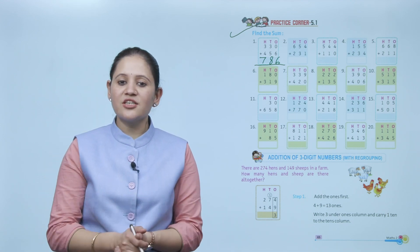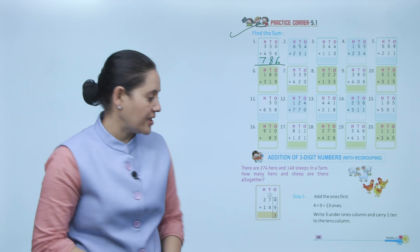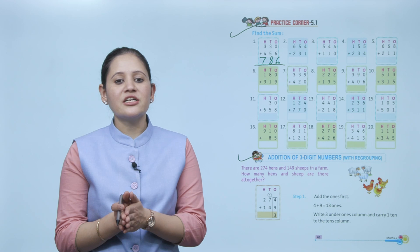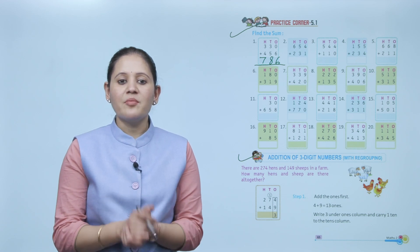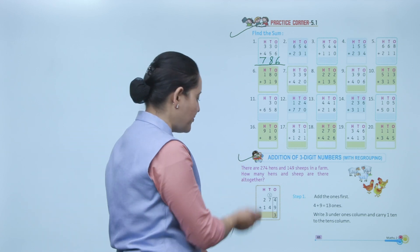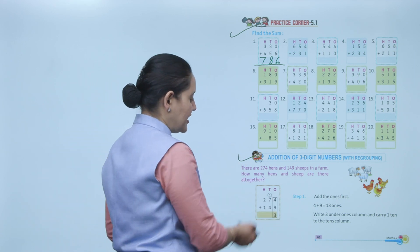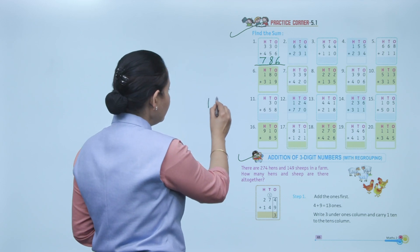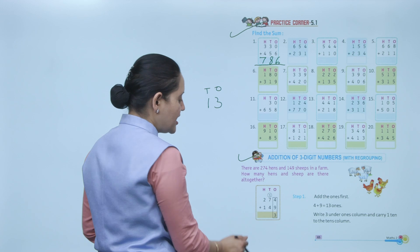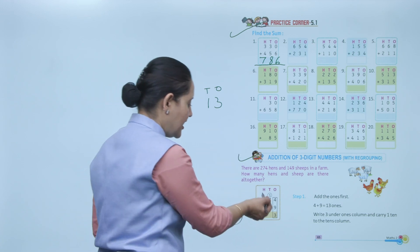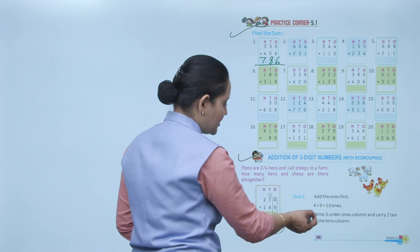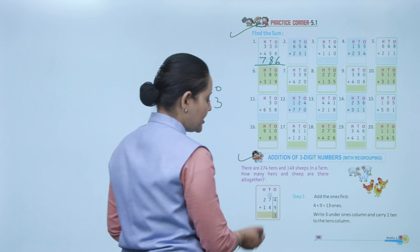Next is addition of three-digit numbers with regrouping. There are 274 hens and 149 sheep in a farm. How many hens and sheep are there altogether? We add 274 plus 149. Starting from ones: 4+9=13. Since 13 is a two-digit number, write 3 under the ones column and carry 1 ten to the tens place.